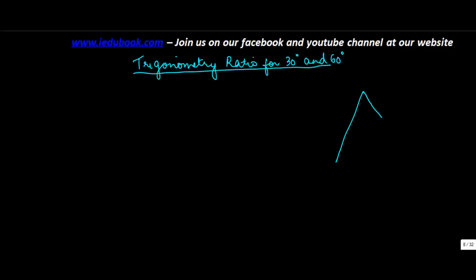Let us take an equilateral triangle PQR. So PQR is an equilateral triangle. Now if this is an equilateral triangle, all three angles will be equal to 60 degrees.